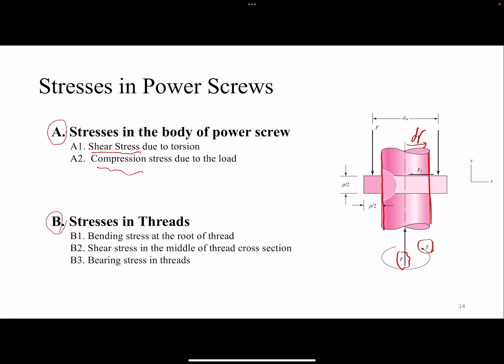And in the thread we're going to have the bending, so at the root of the thread, we're going to have the shear, and the shear is maximum in the middle of the cross section, and also the bearing stresses. So basically the compression but on the thread itself.